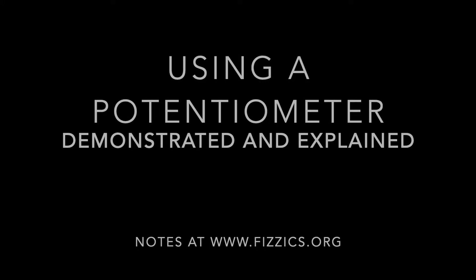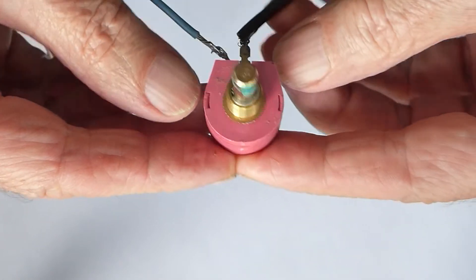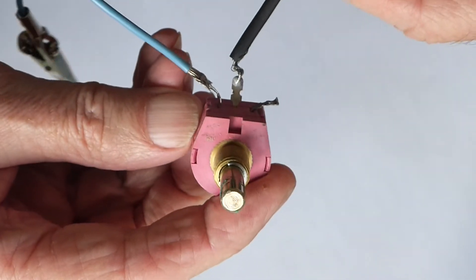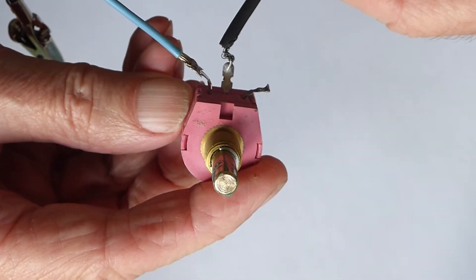A potentiometer is a device that you can use to make fine adjustments to the potential difference or voltage of a supply.